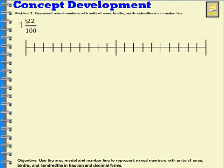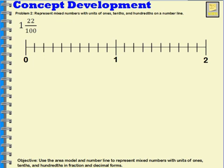Now let's try this with a number line. We have one and 22 hundredths, and I want to see where that would be. I'm going to set my number line up starting at zero and ending at two, because I know one and 22 hundredths is going to be between zero and two. One whole would be right in the middle of that number line. I'm going to jump from zero to one — that's my one whole. Now I need to go 22 out of 100 more.